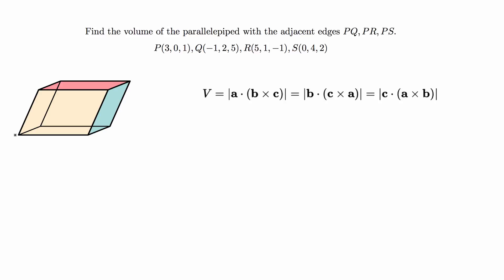If we call this vertex P, for example, we can have this be Q, this here can be R, and this S, so we have PQ, PR, PS.